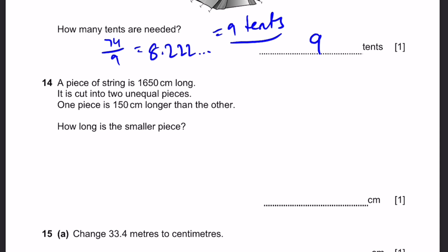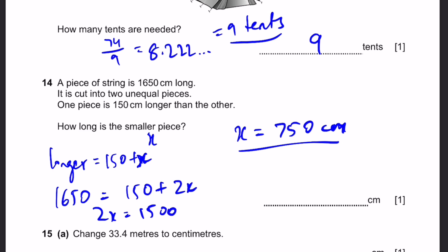Question 14. A piece of string is 1650 centimeters long. It's cut into two unequal pieces. One piece is 150 centimeters longer than the other. How long is the smaller piece? So let's say the smaller piece is x. That means the longer piece is equal to 150 plus x. So adding them up, there are only two pieces. So 1650 total length is equal to 150 plus x plus x, which is 2x. 2x equals 1,500 and x equals 750 centimeters. And that is the length of the smaller piece. That's the answer.